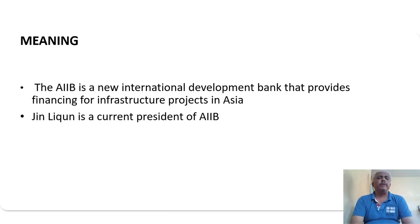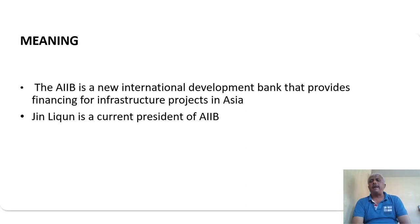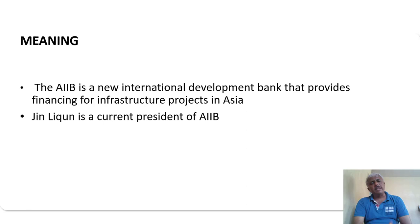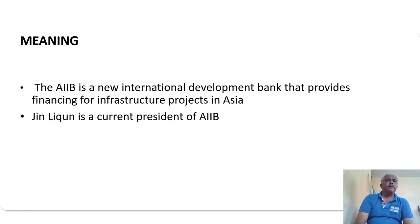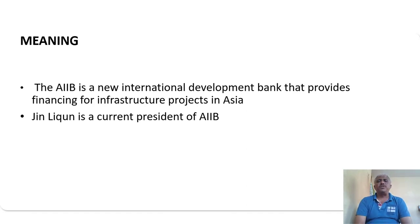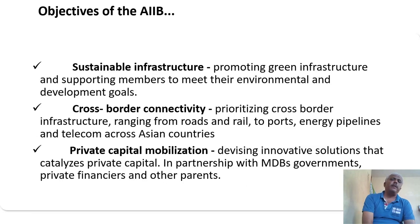Meaning of AIIB: it is a new international development bank that provides financing for infrastructure projects in Asia. It has been established for the purpose of funding infrastructure projects. Jin Liqun is the current president of AIIB.